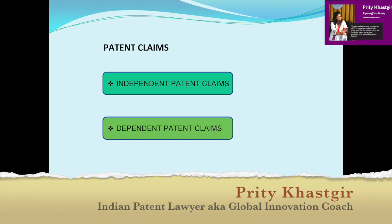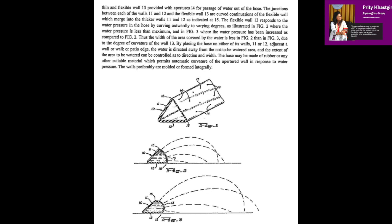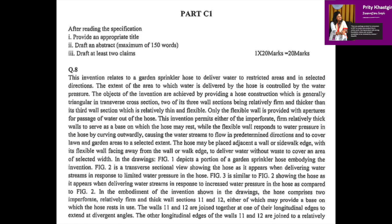We'll try to re-emphasize those pointers here, particularly while attempting Part C1. In question eight, at first look, you can see the paper talks about drawings — Figure 1, Figure 2, Figure 3. The first thing you need to look at is the figure. Figure 1 gives you an overview of what the invention is all about, and accordingly you can form the title.